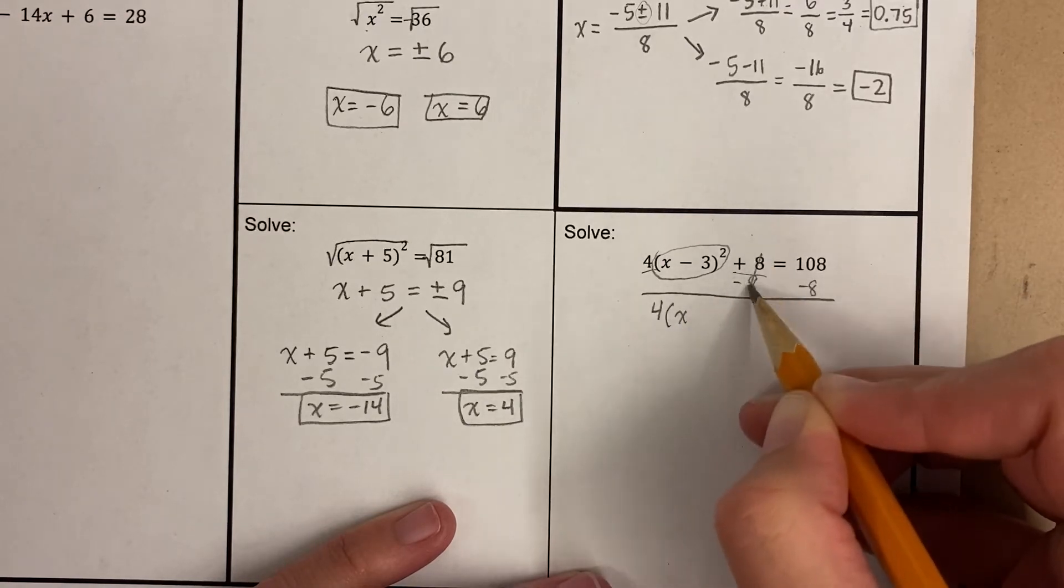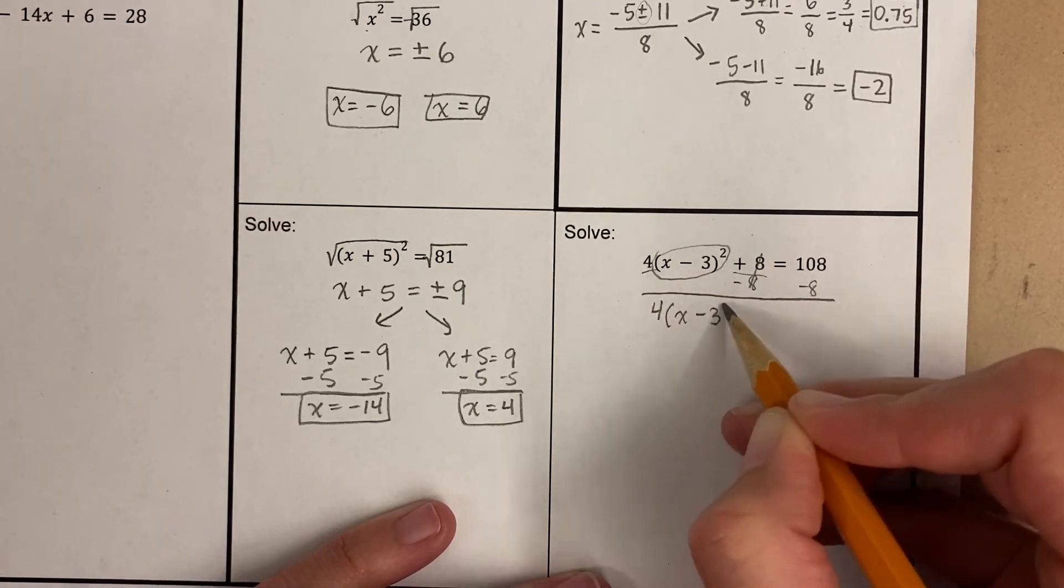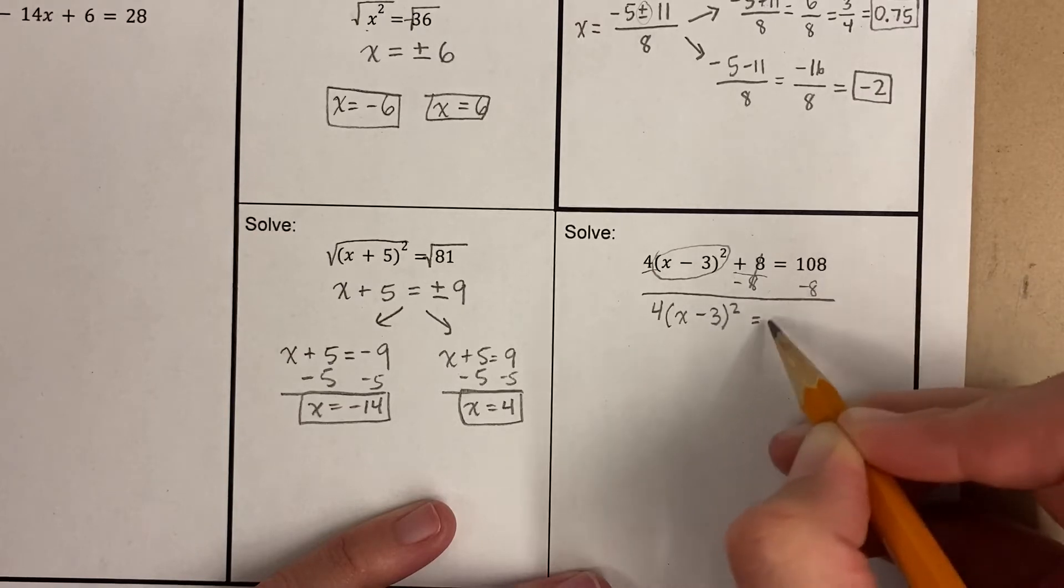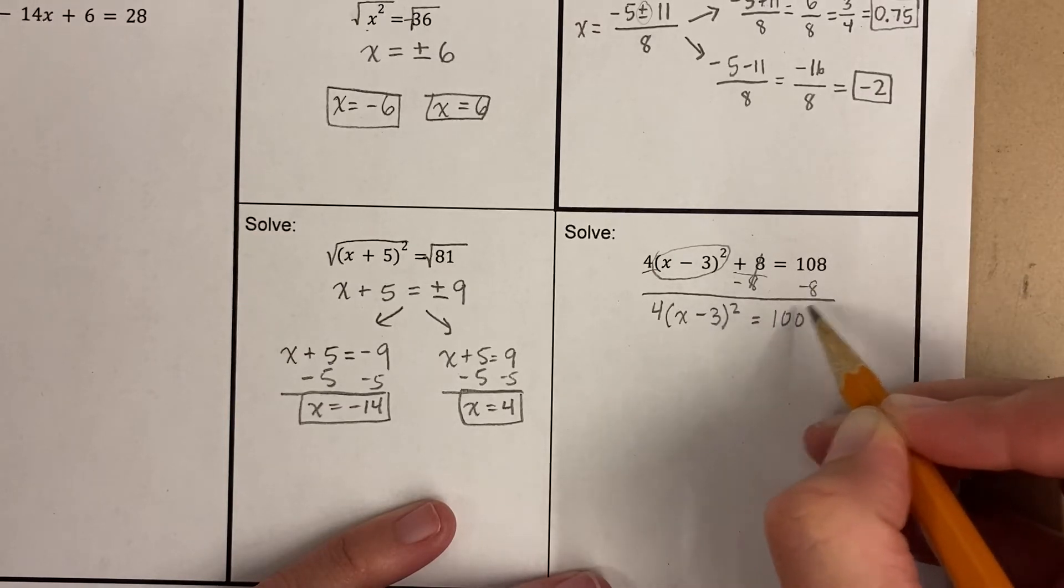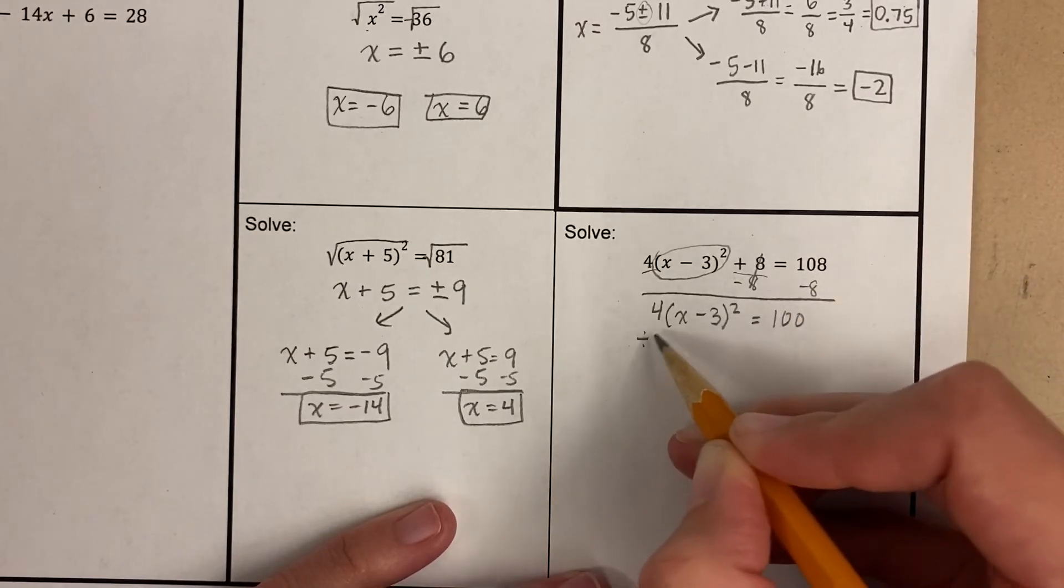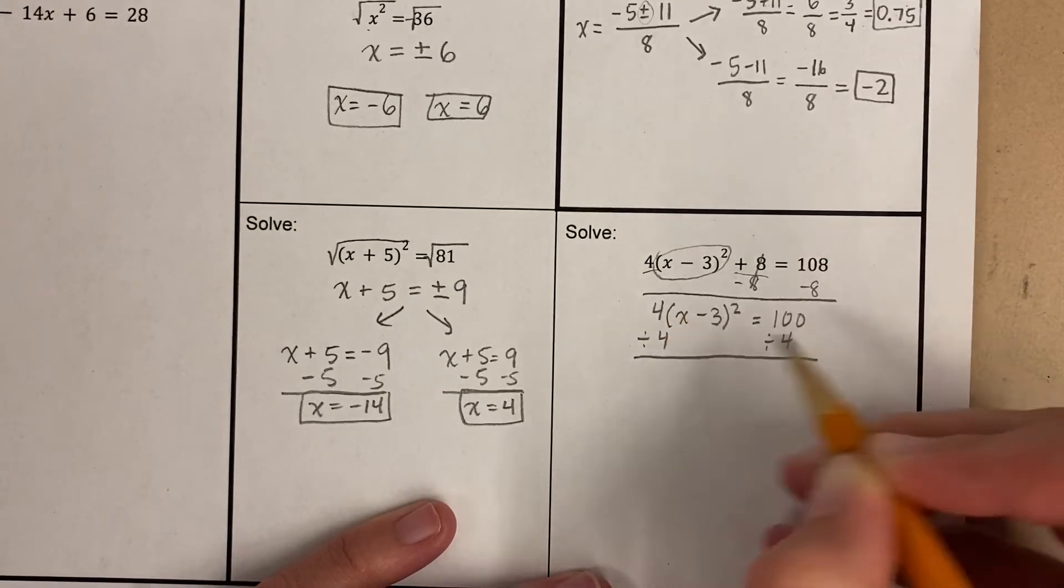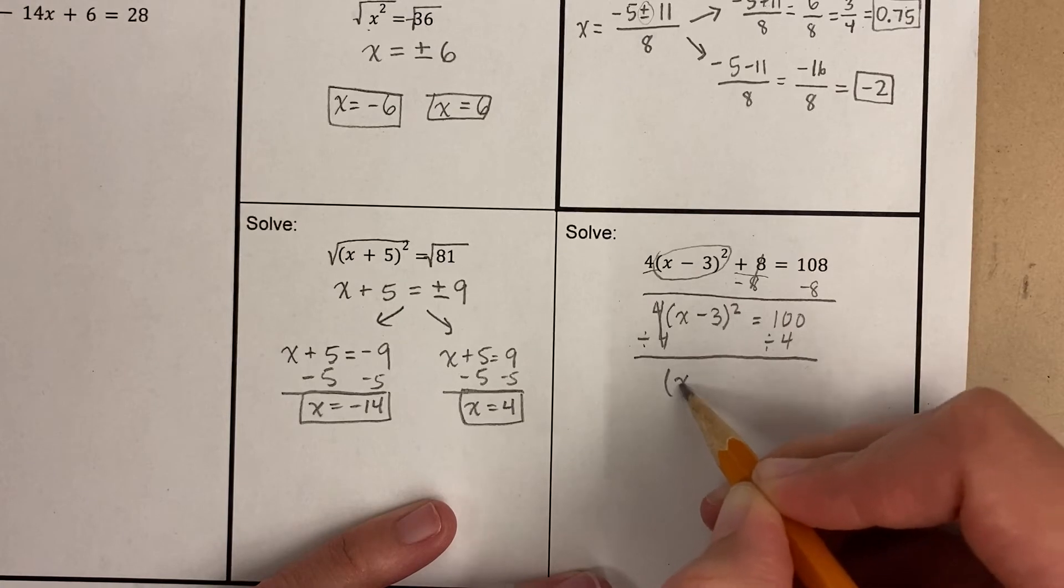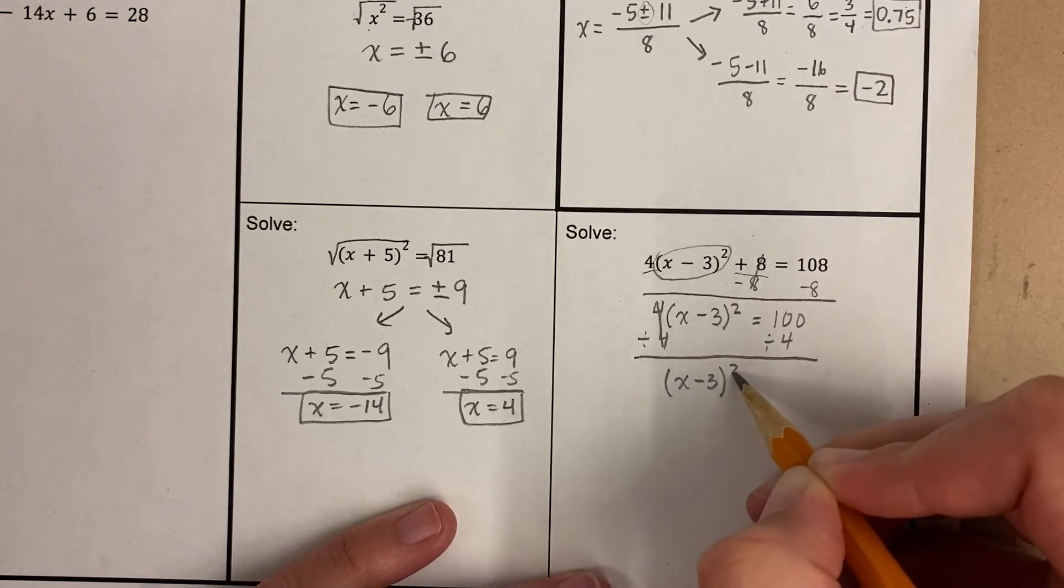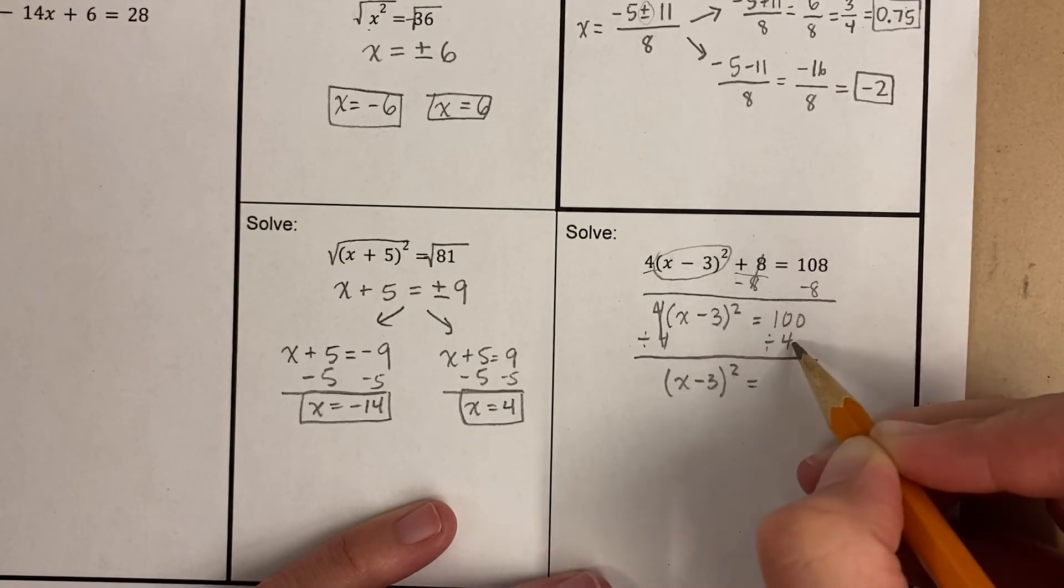This is the only thing that I've gotten rid of is 8 here, right? So I'm bringing down everything else exactly as it is. 100 minus 8, sorry, 108 minus 8 is 100. I'm gonna divide by 4. This 4 is being multiplied, so I'm gonna divide.